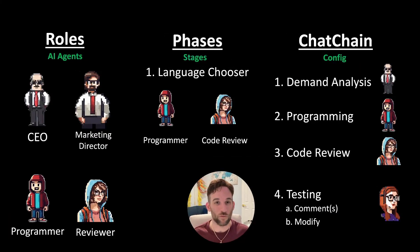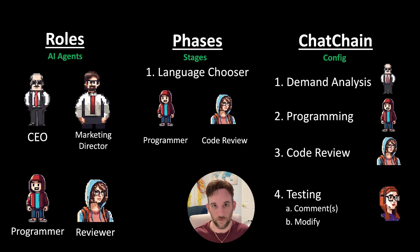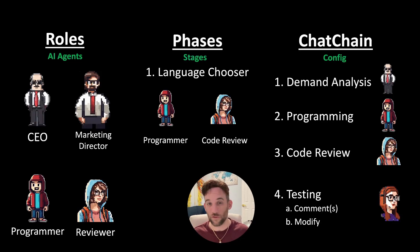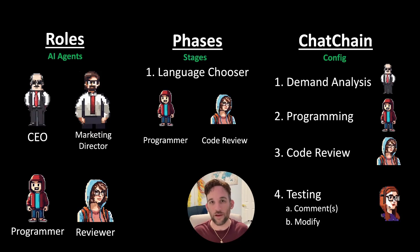There are three components to ChatDev: roles, phases, and chat chain. The roles are the AI agents, or the employees, that you want to hire for your software development team. You can have the CEO, a marketing director, a programmer, reviewer, a code tester, art designer — whatever you want. These are where you define your AI agents to develop whatever it is you want.